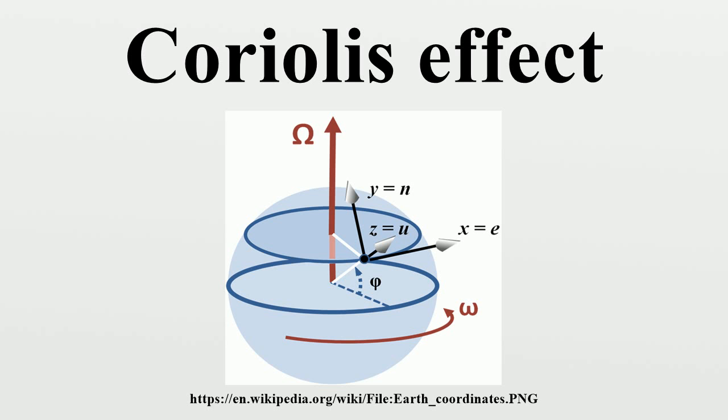The acceleration entering the Coriolis force arises from two sources of change in velocity that result from rotation. The first is the change of the velocity of an object in time. The same velocity will be seen as different velocities at different times in a rotating frame of reference. The apparent acceleration is proportional to the angular velocity of the reference frame and to the component of velocity of the object in a plane perpendicular to the axis of rotation. This gives a term.